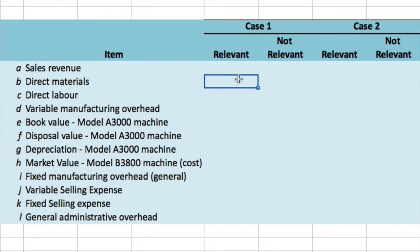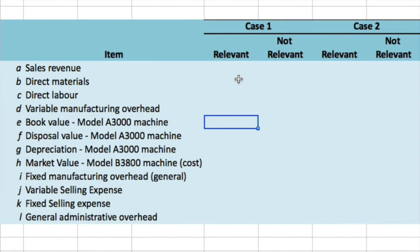Whenever you have to classify costs and you're unsure if they're relevant or irrelevant, the first step is: all sunk costs, ignore them; and all costs that would be the same under each alternative, ignore them too. Let's see if we can find some of those. We are told that this new machine is going to be added on top of the existing machine.